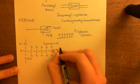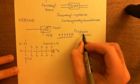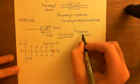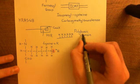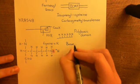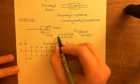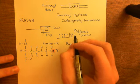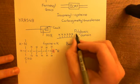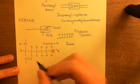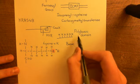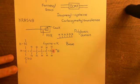This is why it's called a polybasic domain — because the lysine residues are capable of accepting protons, and the definition of a base is a molecule which is capable of accepting protons. We've got six groups here, all of which can accept protons, which is why it's called a polybasic domain. Poly means many, basic means can accept protons.